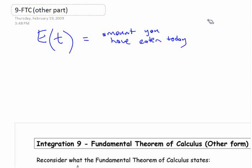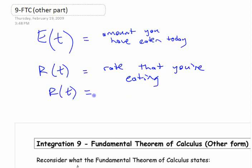Let's say that R of T is the rate that you're eating at. This is the rate. So R of T equals what? How is it related to E of T? No, the rate R of T is E prime. Yeah, it's E prime of T. It's the rate you're eating at.